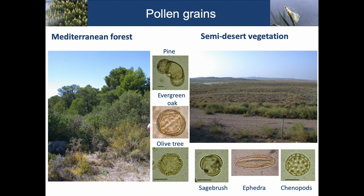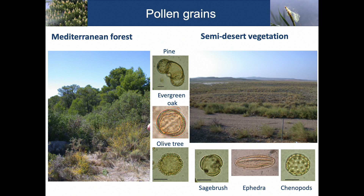This shows how pollen looks in the Mediterranean forest. When we identify an expansion of the Mediterranean forest, we have high percentages of pine, evergreen oak, and olive tree. When there is a contraction, we see the development of semi-desert vegetation with sagebrush, ephedra, and chenopodiaceae — the kind of landscape that now exists in Iran and Iraq, very dry and also very windy environments.